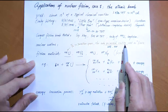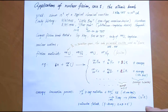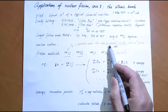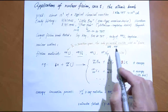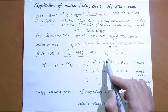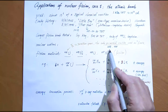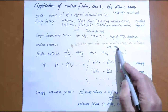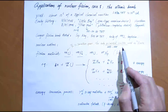A primordial nuclide is a specific combination of protons and neutrons that existed before the Earth was formed. There are hundreds of nuclides, and 288 of them are primordial. Out of those 288, 255 are stable — they do not decay — and they still exist today. Of all the primordial nuclides, Uranium-235 is the only one being used as a fissile.